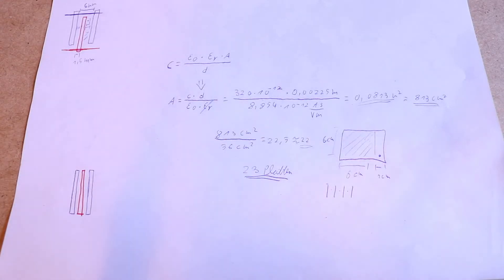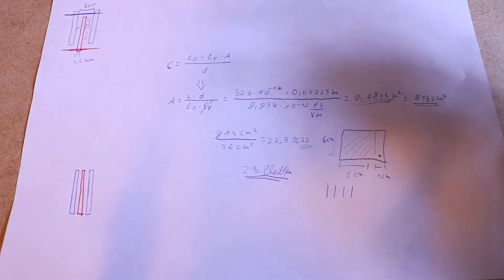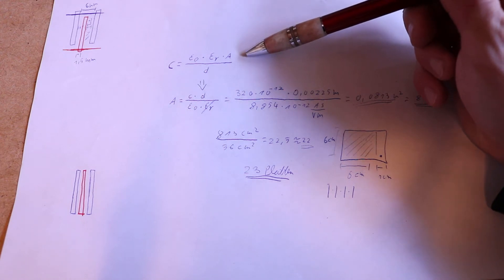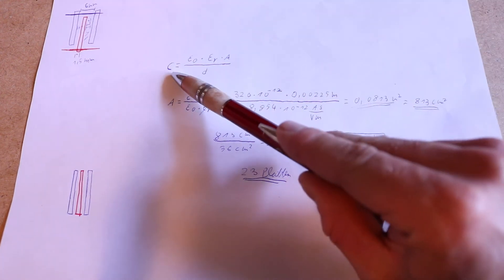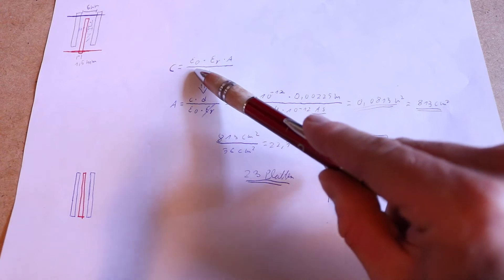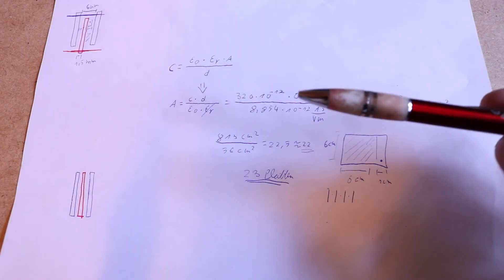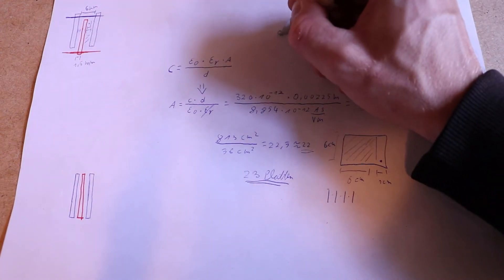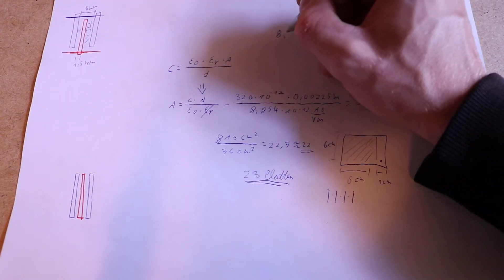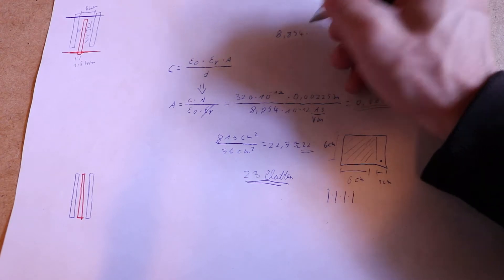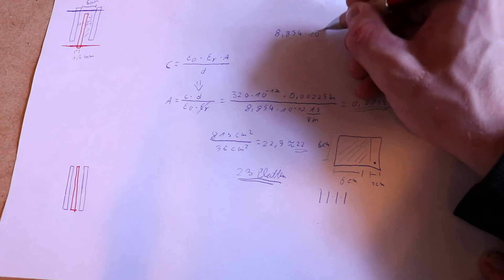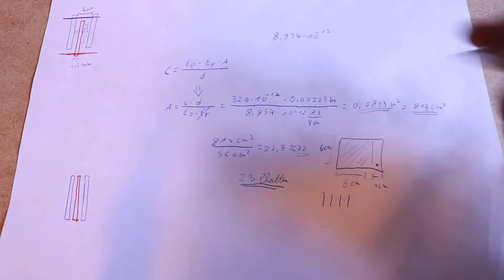To calculate the amount of plates I need or the amount of aluminum I have to cut, I used the formula for a plate capacitor. This is the capacitance, this is the electric field constant ε₀, and this is just a constant: 8.854 times 10 to the power of minus 12.